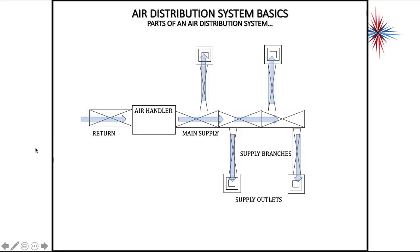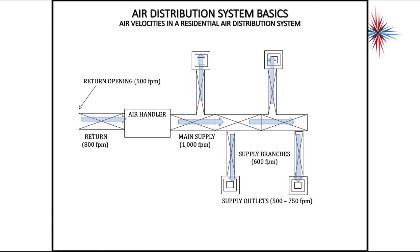So if we do the pictorial representation of all these parts, we have our return air, we have our air handler, we have our main supply duct, and then we have our supply branches with supply outlets. Now, there's a couple different types of duct systems out there, but we're going to talk about the basic one first, which is called an extended plenum system.